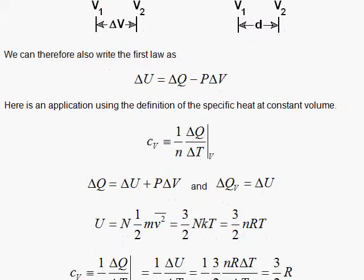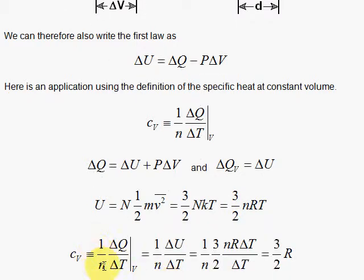So we go on to the definition: one over n, delta Q over delta T at constant volume. And delta U is simply going to be three-halves nR delta T. We're going to divide by delta T and divide by n. That's our definition. If we do that, the n's cancel and the delta T's cancel, and we get three-halves R. A nice result. The specific heat at constant volume for an ideal gas.